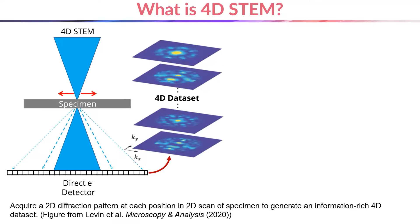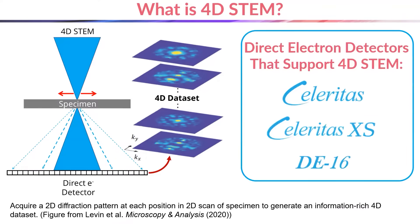4D STEM requires the use of a pixelated detector which is sensitive to single electrons. This is a list of some of the detectors from Direct Electron that can be used to support 4D STEM imaging.